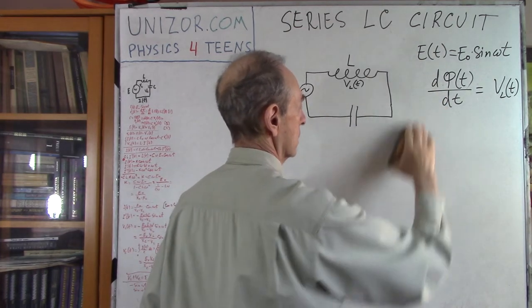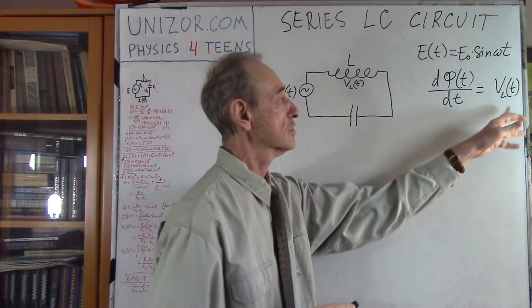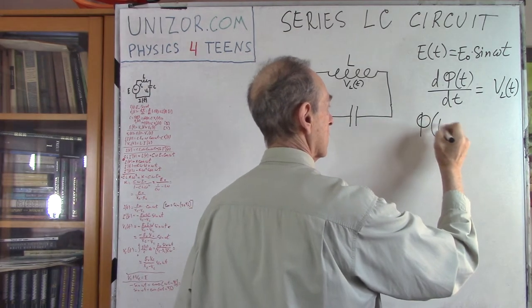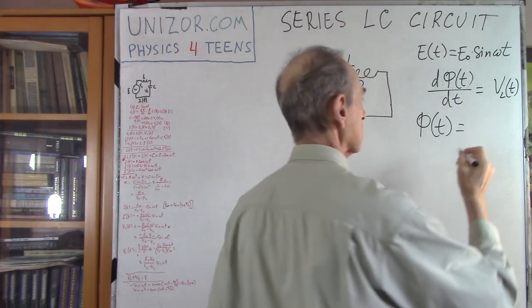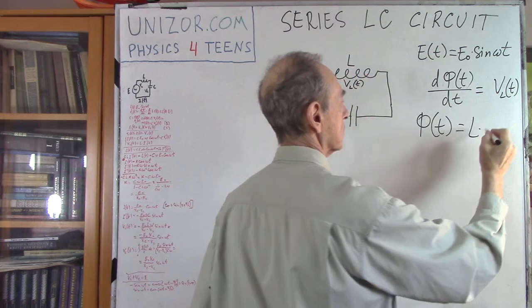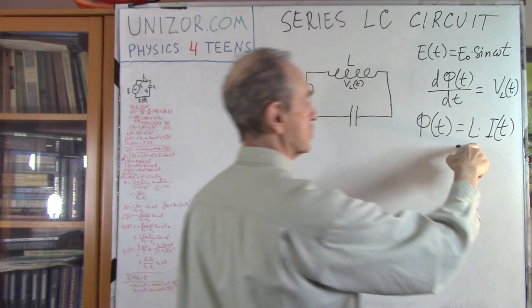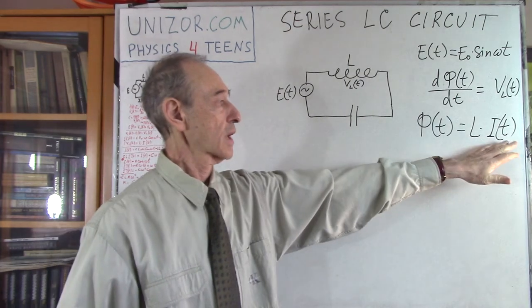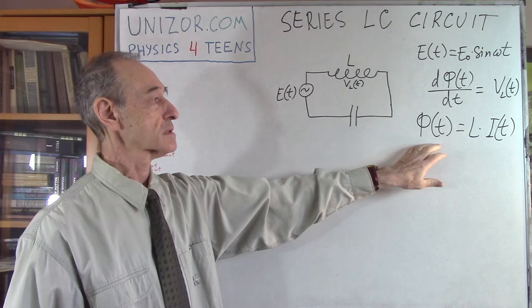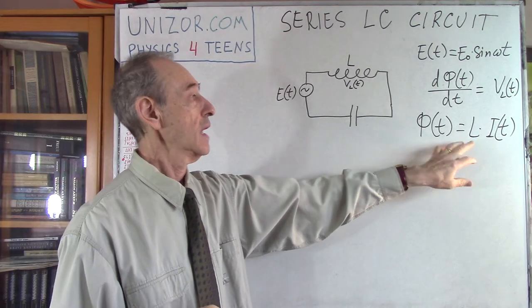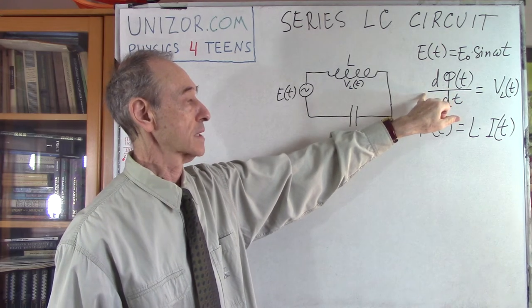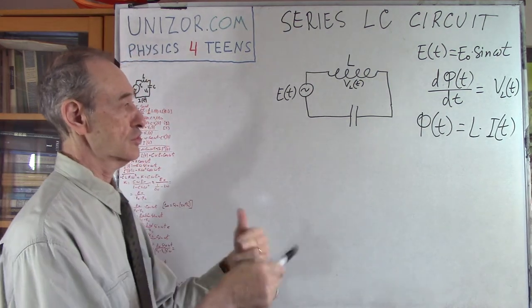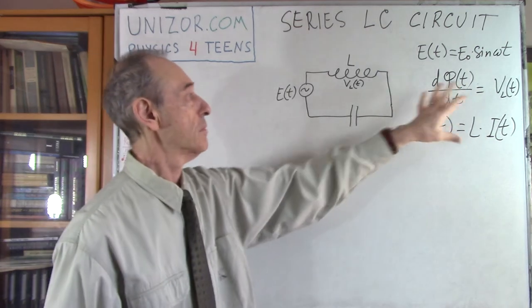The voltage drop VL depends only on the rate of change. The magnetic flux depends on the properties of the inductor, which is L — the inductance — and the current going through it. The current generates a magnetic flux proportional to the inductance of the inductor. The rate of change of magnetic flux gives self-induction, which resists the change of current. That's all about the inductor.